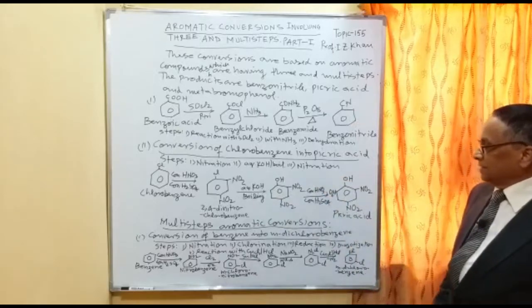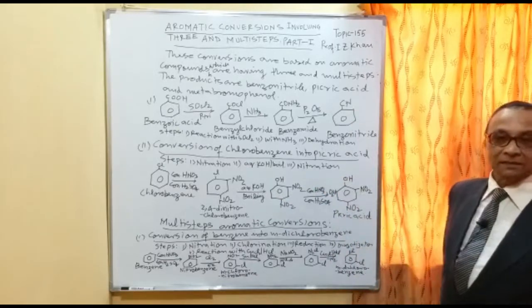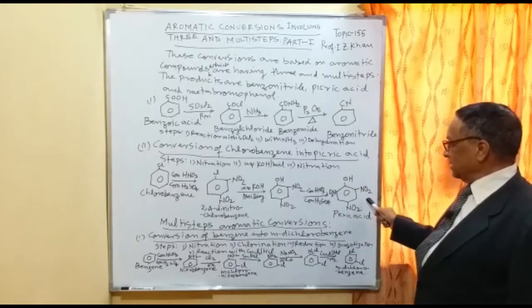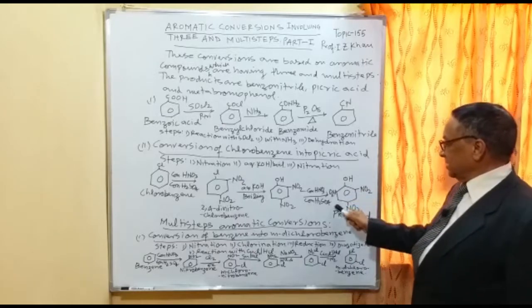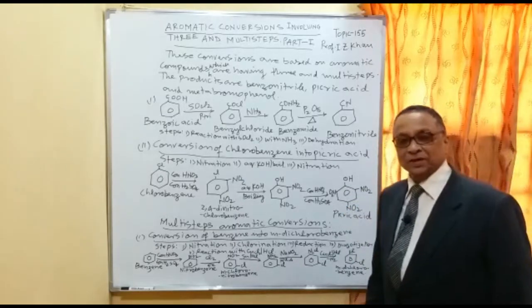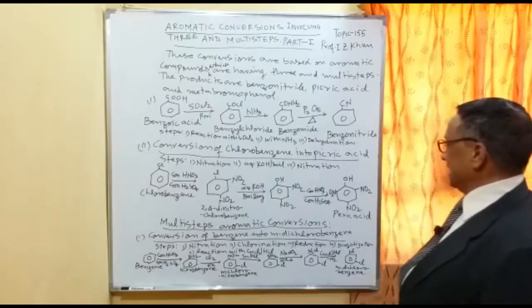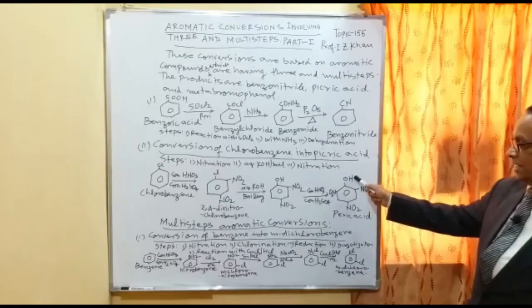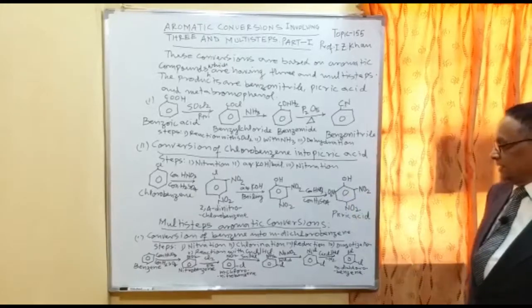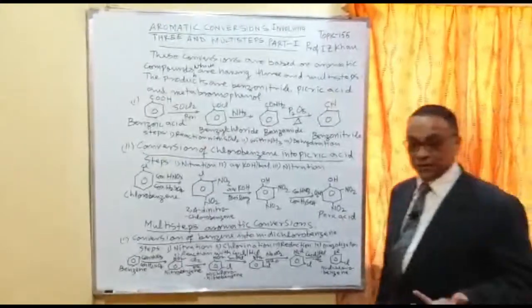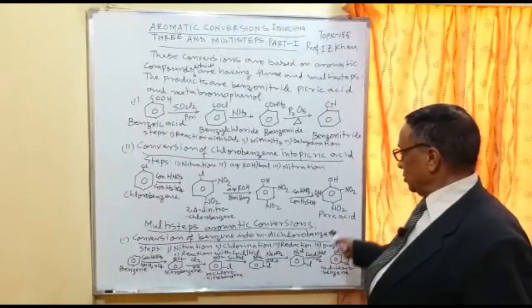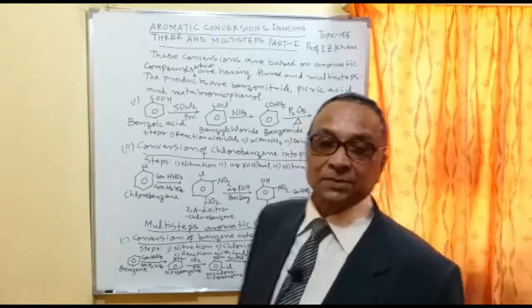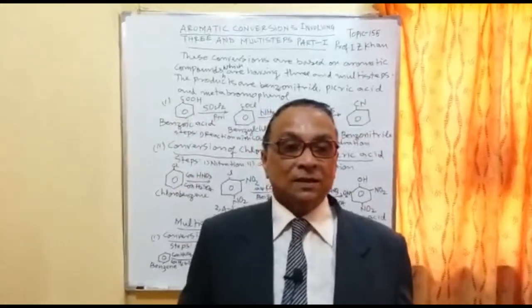Finally, nitration is again done in the presence of concentrated nitric acid and concentrated sulfuric acid, and then you get a product where three nitro groups are substituted on the phenol ring — that is your picric acid. Picric acid has a benzene ring with a hydroxyl group and three nitro groups attached.